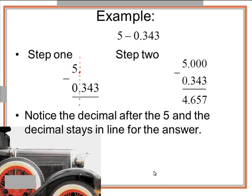Then we fill in our zeros and we're going to subtract. And you notice for this one you're going to have to borrow to get 4.657 thousandths.